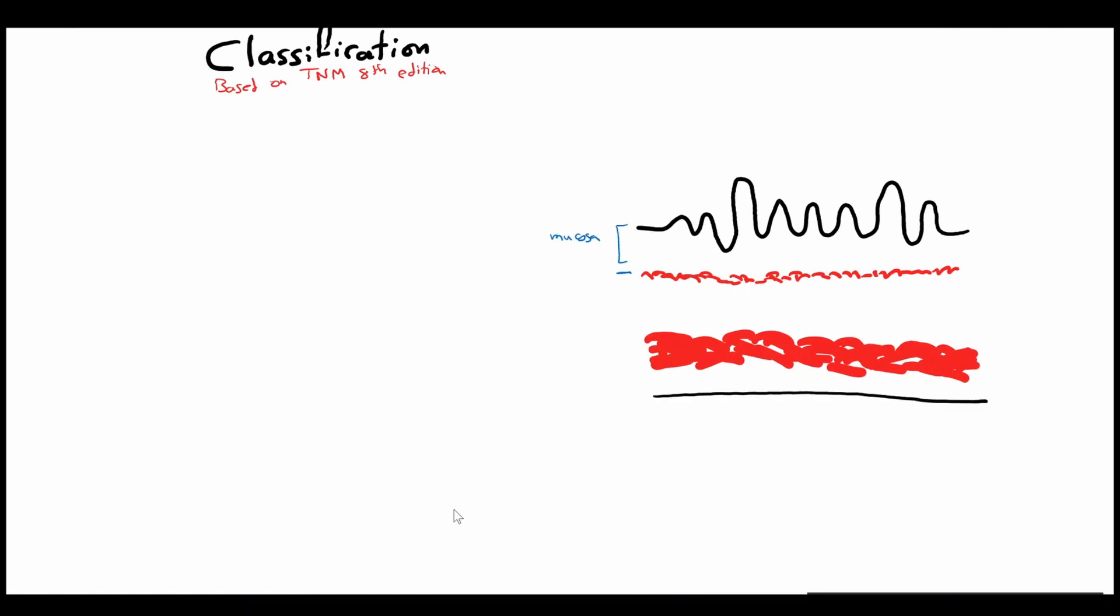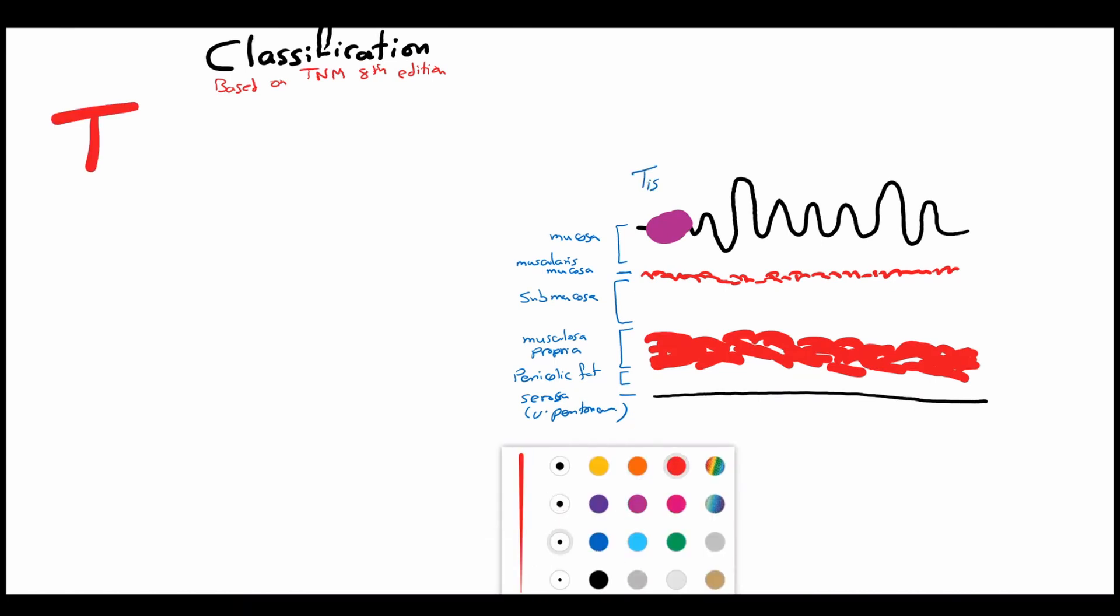The colonic wall is formed of mucosa, muscularis mucosa, submucosa, muscularis propria, pericolic fat and serosa.